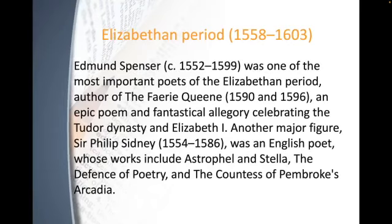Moving into the Elizabethan period of the English Renaissance, let's look at the people who made it. Edmund Spenser was one of the most important poets of the Elizabethan period, author of The Faerie Queene, written in 1590 and 1596, an epic poem and fantastical allegory celebrating the Tudor dynasty and Elizabeth the First. Another major figure, Sir Philip Sidney, was an English poet whose works included Astrophel and Stella, The Defence of Poesy, and the Countess of Pembroke's Arcadia.